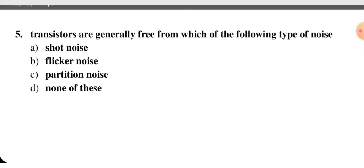Next question: transistors are generally free from which type of noise — shot noise, flicker noise, partition noise, or none of these? Shot noise occurs in active devices like diodes and transistors. Flicker noise is due to imperfect surface behavior of semiconductor devices. Partition noise occurs when a circuit is divided into two parts. Transistors are free from partition noise, so C is the correct option.